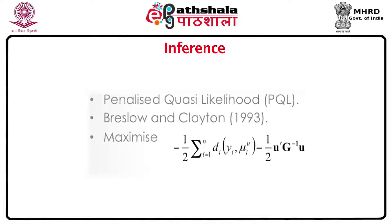Strictly speaking, Breslow and Clayton do not assume that y follows the likelihood we have been using, but make assumptions about the mean and variance of y. If we do not believe the likelihood assumption to be true, we get quasi-likelihood estimators. If we do believe these results come from the likelihood, then the estimators are maximum likelihood estimators.